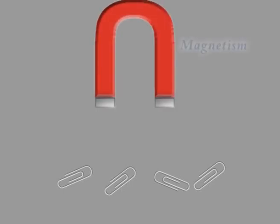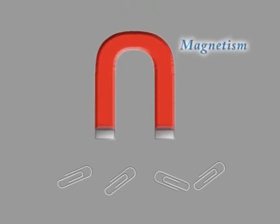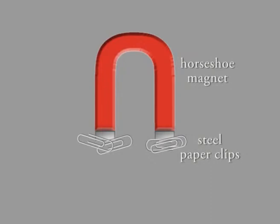Gravity is just one of a number of forces that can act upon an object. The force of magnetism can pull things made of iron or steel towards a magnet.